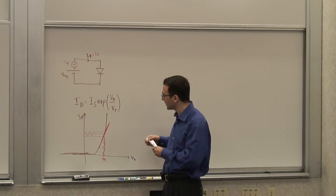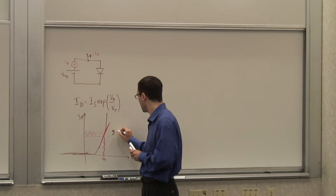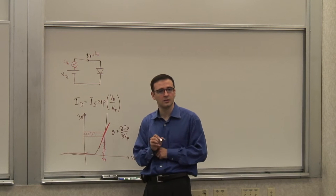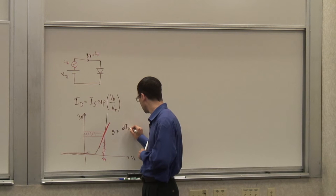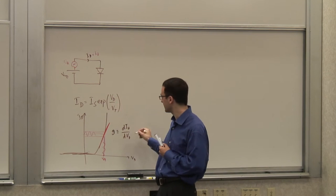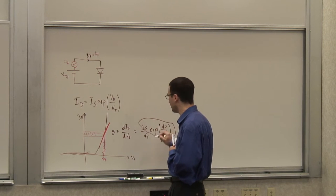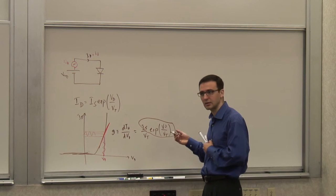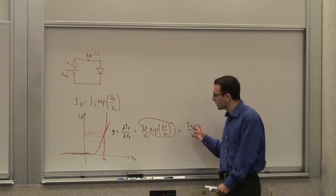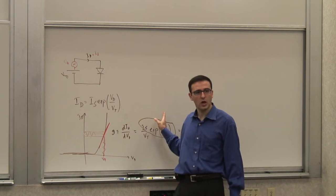How do I calculate this conductance? It's the slope of the line — by definition G = dID/dVD. I can easily calculate this derivative: it gives me IS/VT times e^(VD/VT). I realize that this term is nothing but ID itself — the operating current. So G = ID_quiescent / VT. The larger the operating current, the larger the conductance and the smaller the resistance.